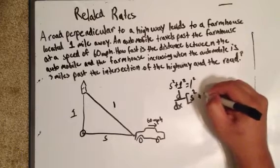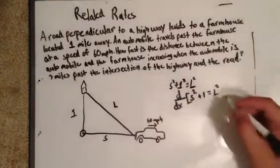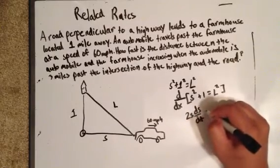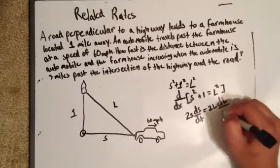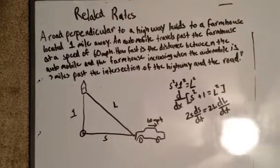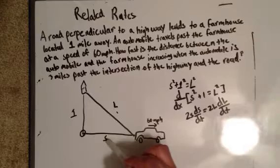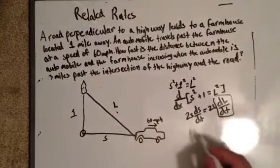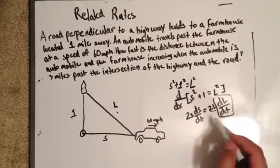Taking the derivative gives us 2s·(ds/dt) = 2L·(dL/dt). We have two variables and we want to know how fast this distance is increasing when s equals 3 miles. We need to solve for dL/dt, so we divide both sides by 2L.